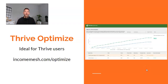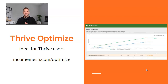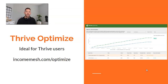Next is Thrive's entry into the page builder comparison space. Thrive is all about conversion-optimized WordPress plugins and themes, and earlier in 2018 they launched Thrive Optimize. It's a really cool platform for Thrive users — but that is the problem. A lot of people use Elementor, Divi, or other page builders, and their solution doesn't work for those users. But if you use Thrive Architect and set up your landing pages with Thrive's tools, this is a fantastic option. You can learn more at incomemesh.com/optimize.